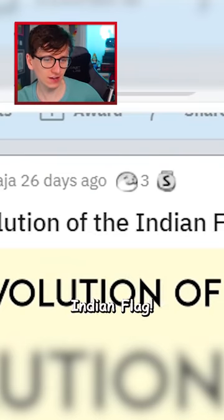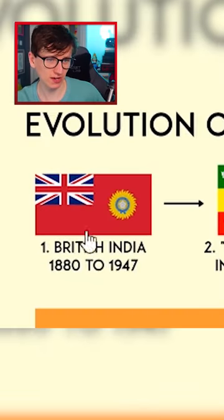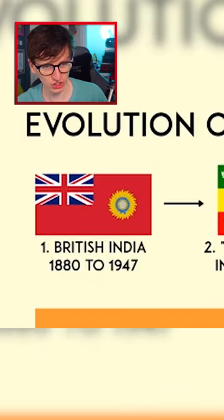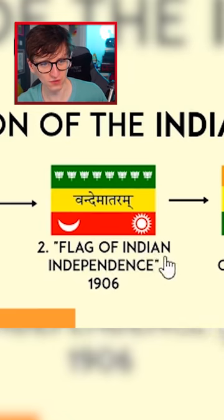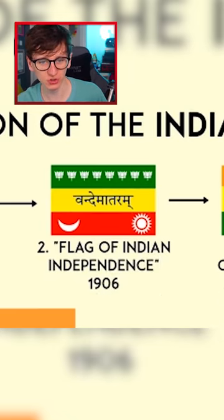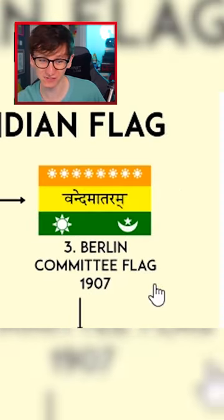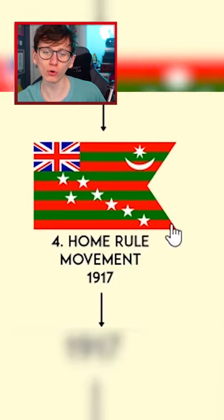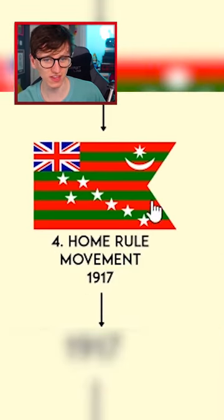Evolution of the Indian flag — when it was owned by the British, then the Indian independence flag from 1906, the Berlin committee flag, then moving on to the Home Rule movement flag.